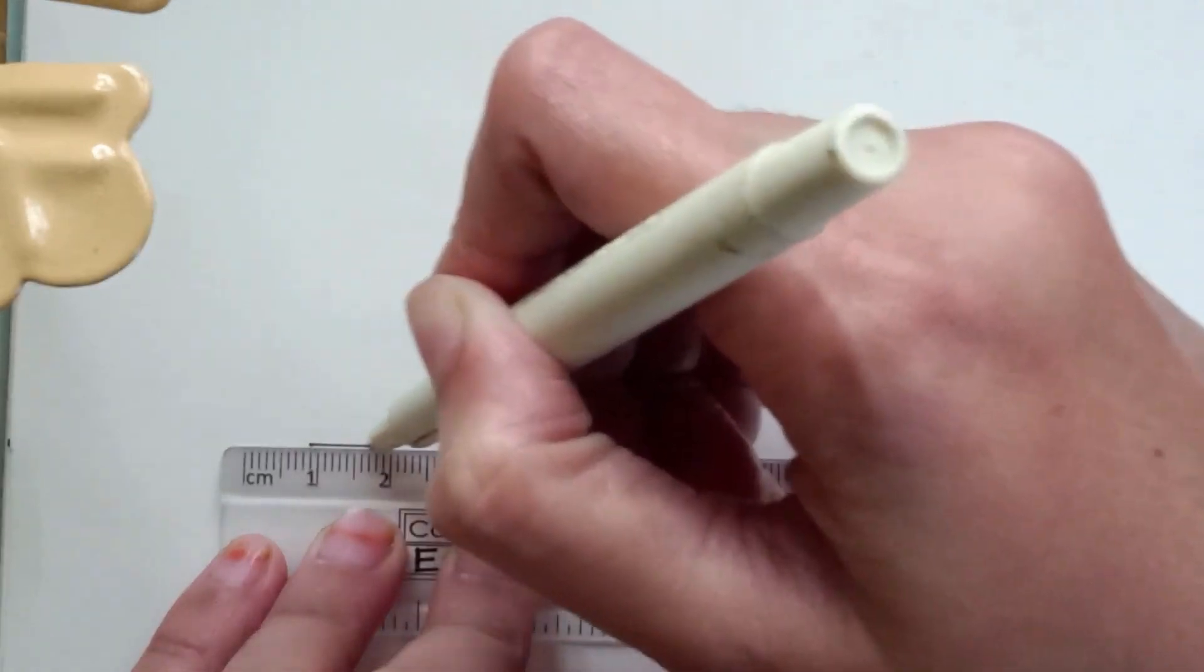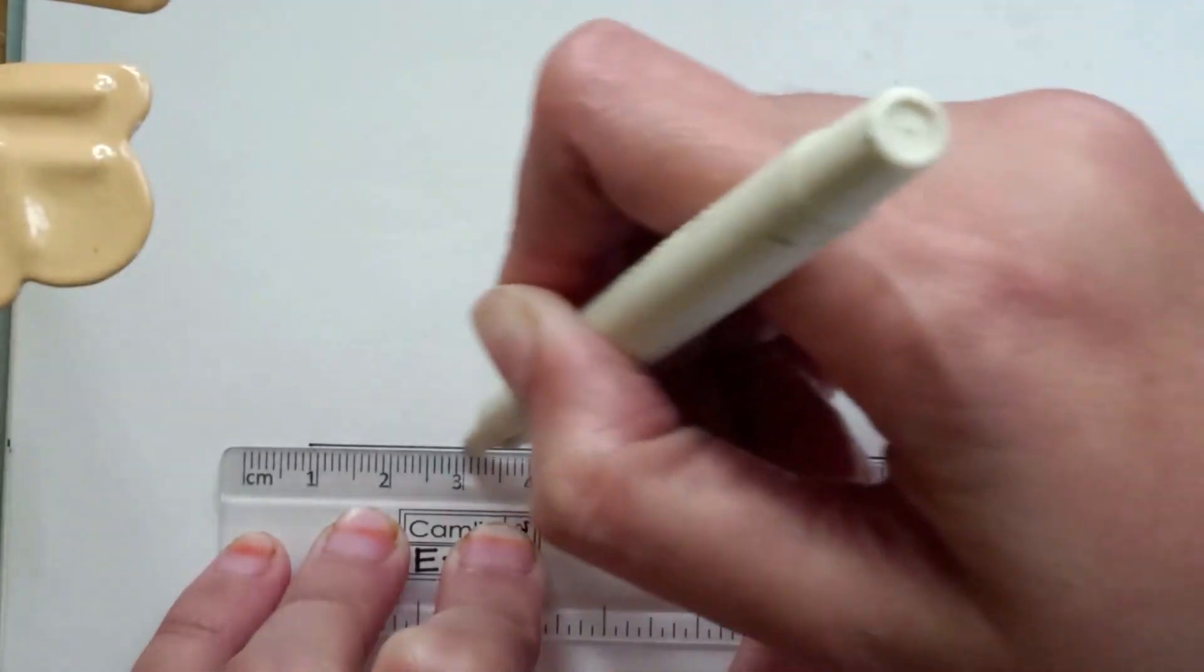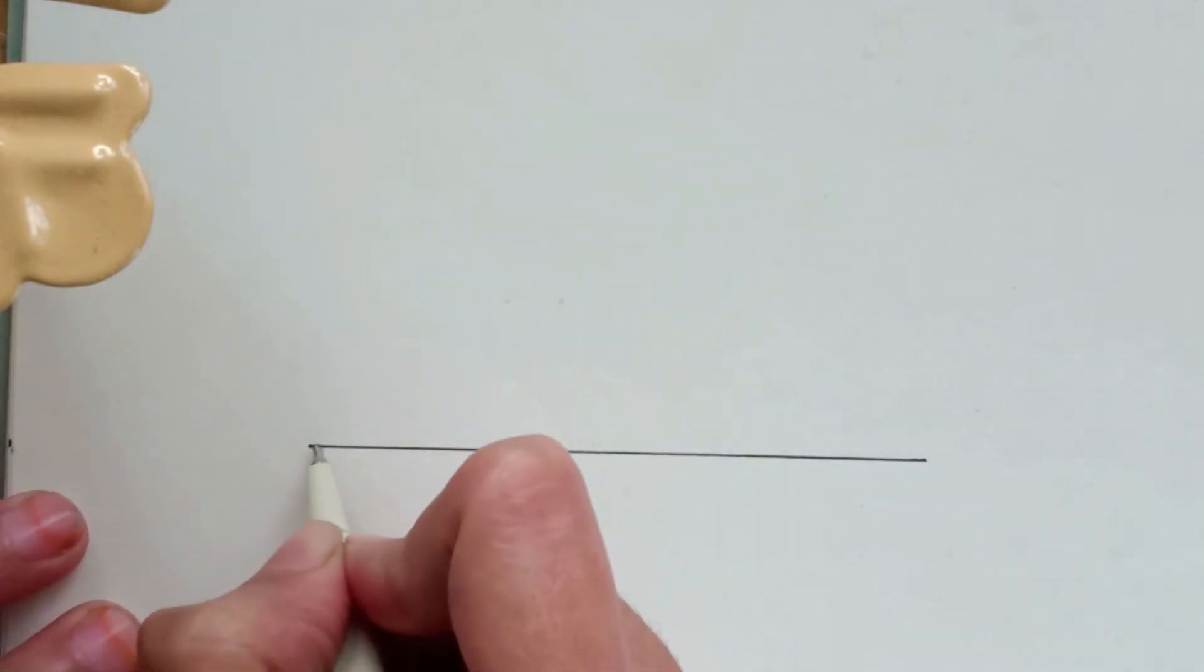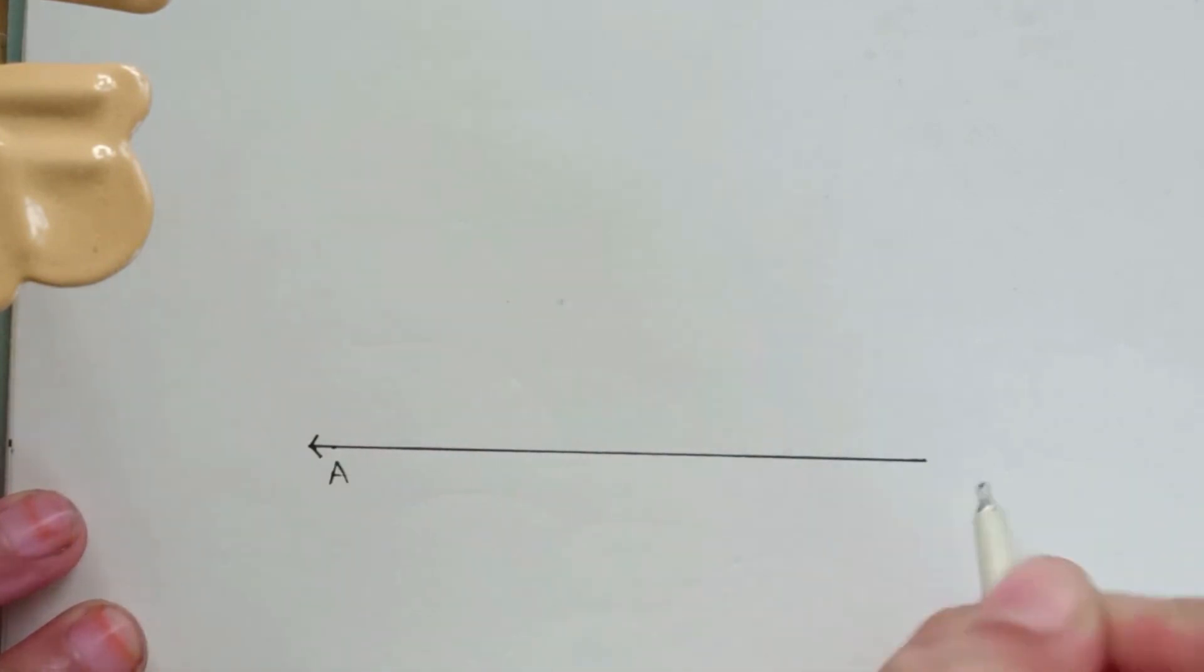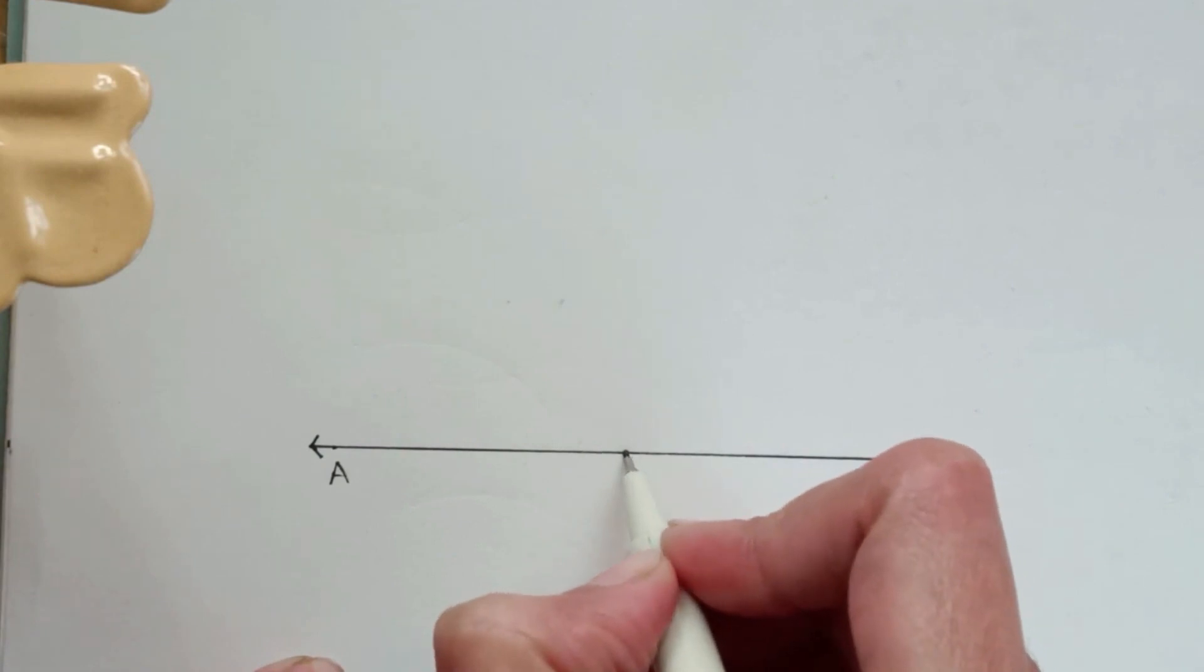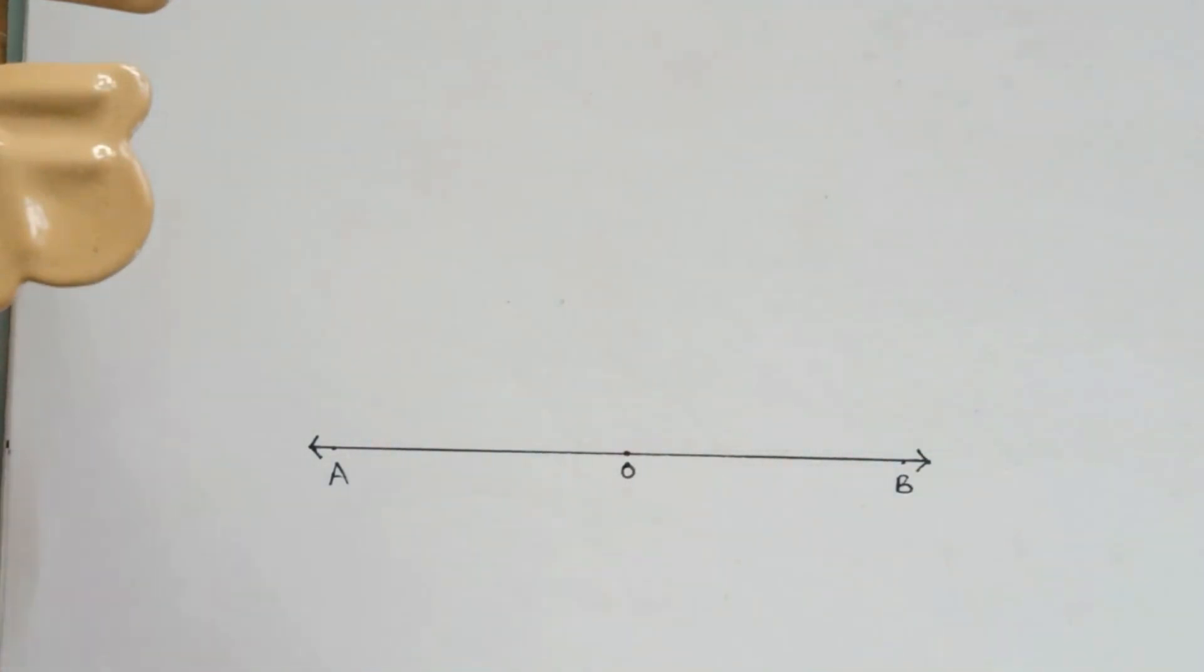So here I am drawing a horizontal line. You can take any length. So I will call this line as A and B, and then mark a point on the line. We'll call that point O.